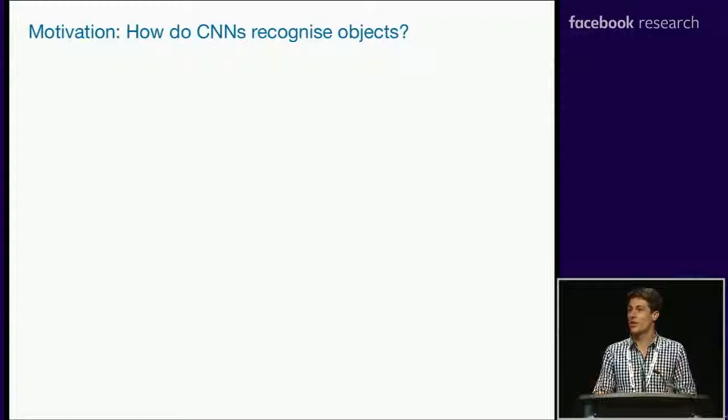We have our last talk of the session from Robert Geirhos on a similar topic — that ImageNet-trained convolutional neural networks are biased towards texture, and increasing shape bias improves accuracy and robustness. I'm very glad to be here today to talk about our work on texture versus shape. The motivation behind our work was a very fundamental question: how do CNNs actually recognize objects?